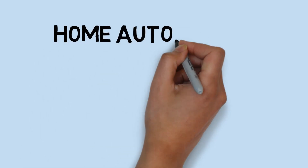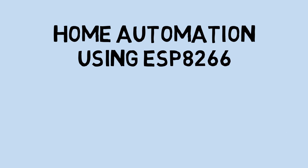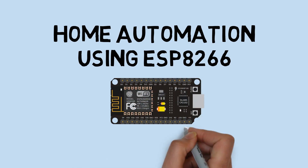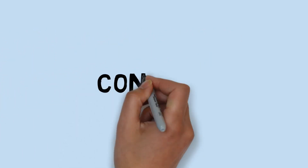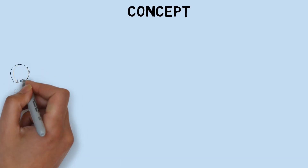Home automation using ESP device. This is the concept of home automation using an ESP device, and MQTT is the protocol for communication.